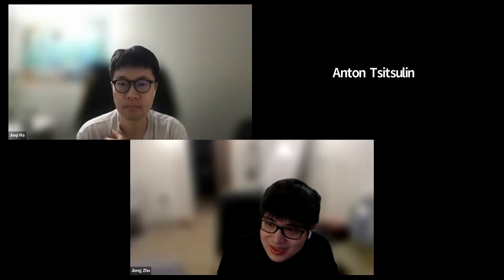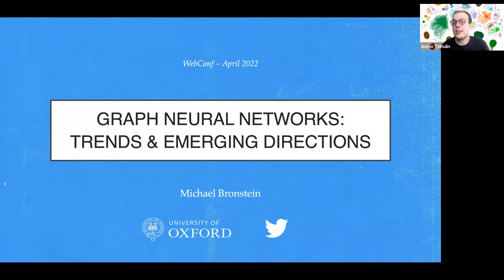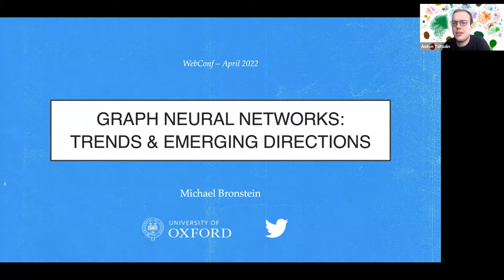Thank you, John. Hello everyone, my name is Anton, and it's my pleasure to chair the first session and start with Professor Michael Bronstein and his keynote talk on graph neural networks trends and open problems. Michael Bronstein is a DeepMind Professor of AI at the University of Oxford and a head of graph learning research at Twitter. He was previously a professor at Imperial College London and held visiting positions at Stanford, MIT, and Harvard.